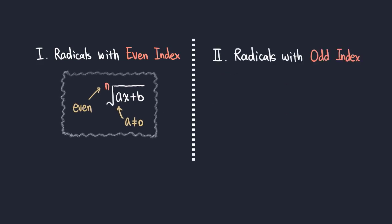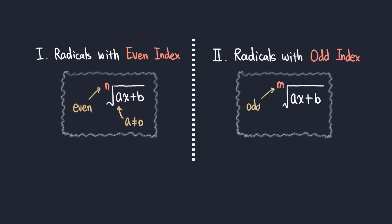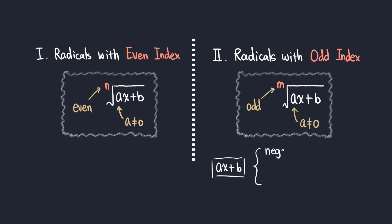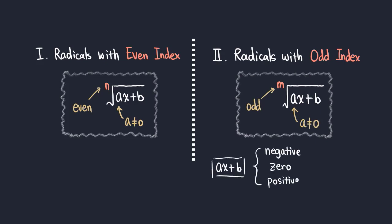For radicals with an odd index, such as cube roots, the expression inside can be negative, zero, or positive. So the domain will be all real numbers.